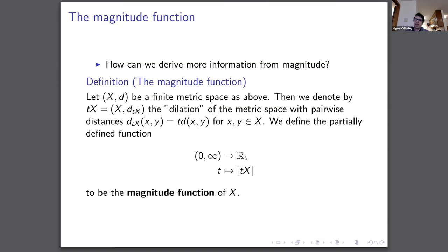To get more information, we scale the spaces. We define the magnitude function based on a scaling factor T, where we take the space X and scale it by T for T in the positive reals. Across all those T values, we define this partially-defined function sending each scaling value T to the magnitude. This is powerfully discerning and has many nice properties — this is where curvature, volume, and dimension encoding for magnitude come from.